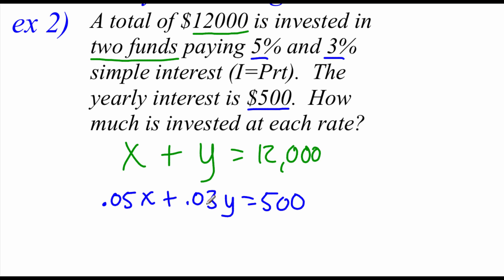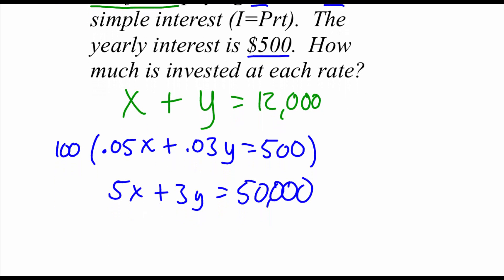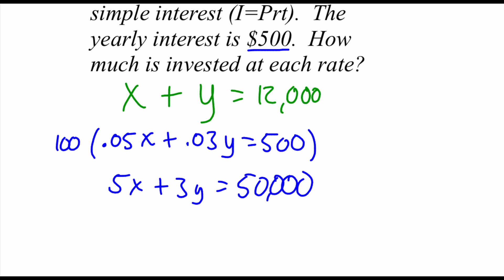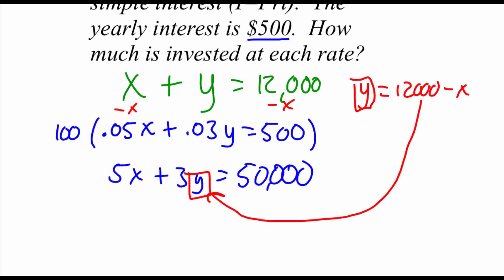Before solving, I don't like dealing with decimal numbers, so I'm going to multiply the second equation by 100 to make it easier. 100 times 0.05x gives 5x, 100 times 0.03y gives 3y, and 100 times 500 gives 50,000. Now taking the top equation and rewriting it: y equals 12,000 minus x. We'll do our substitution — plugging that 12,000 minus x in for our y value.